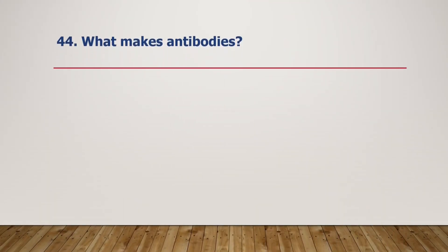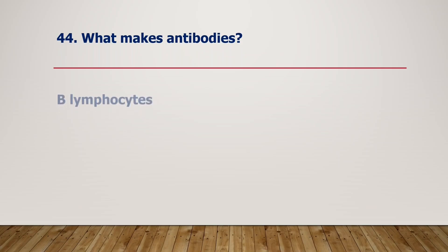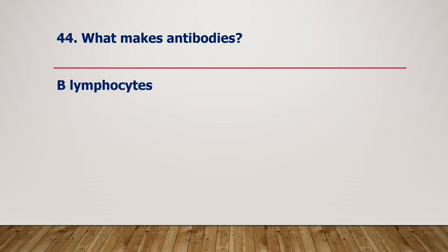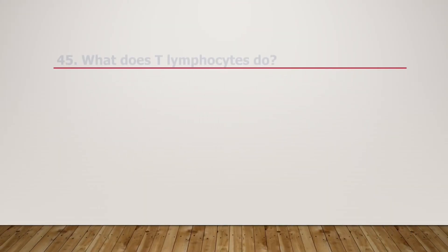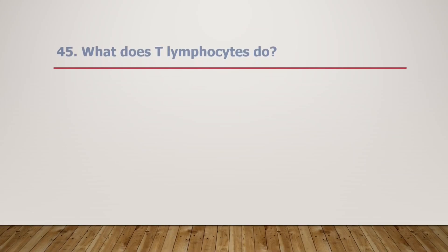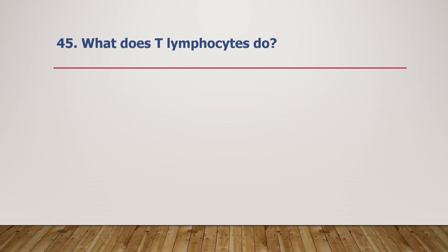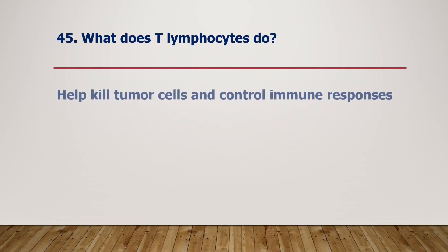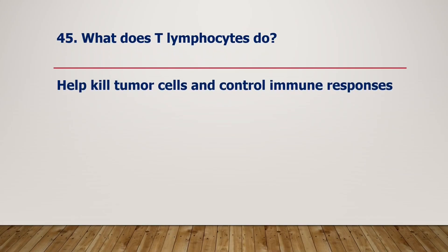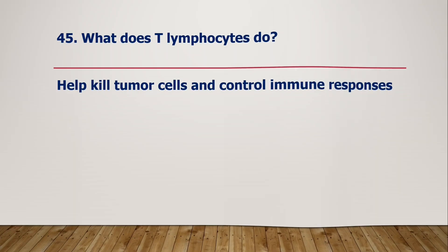What makes antibodies? B-lymphocytes make antibodies. What do T-lymphocytes do? They help kill tumour cells and control immune responses.